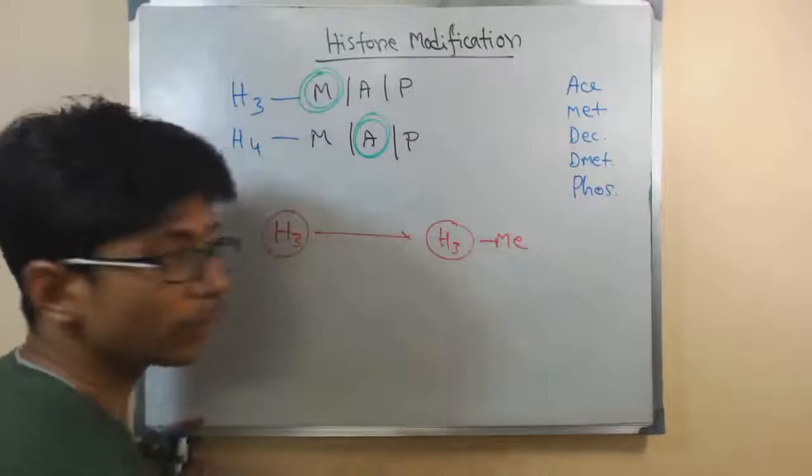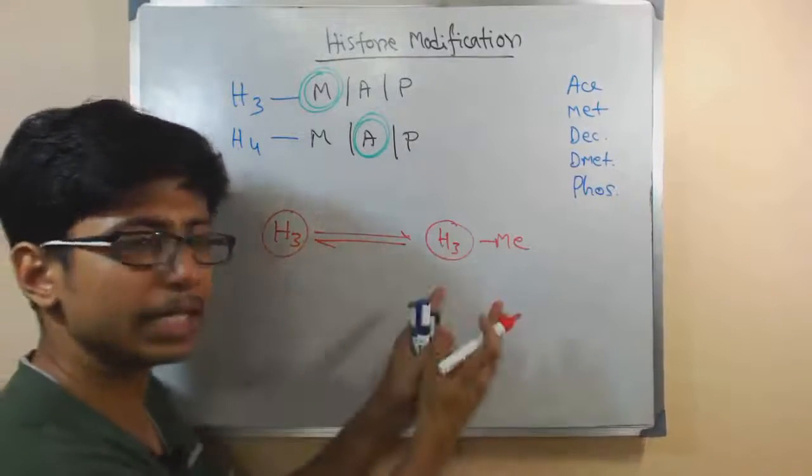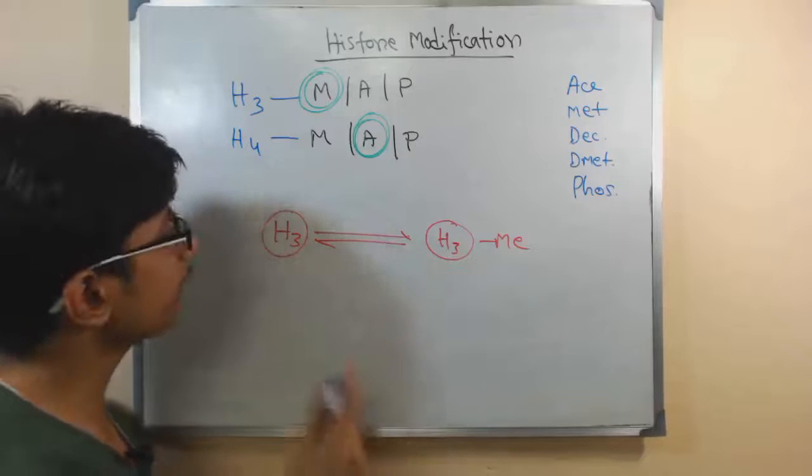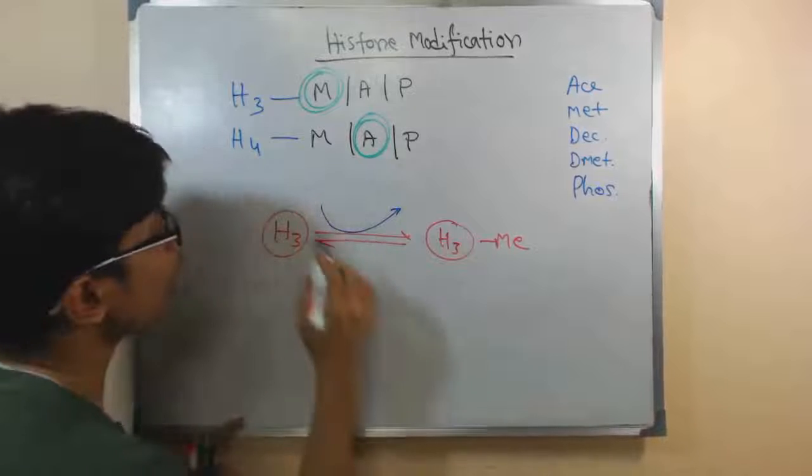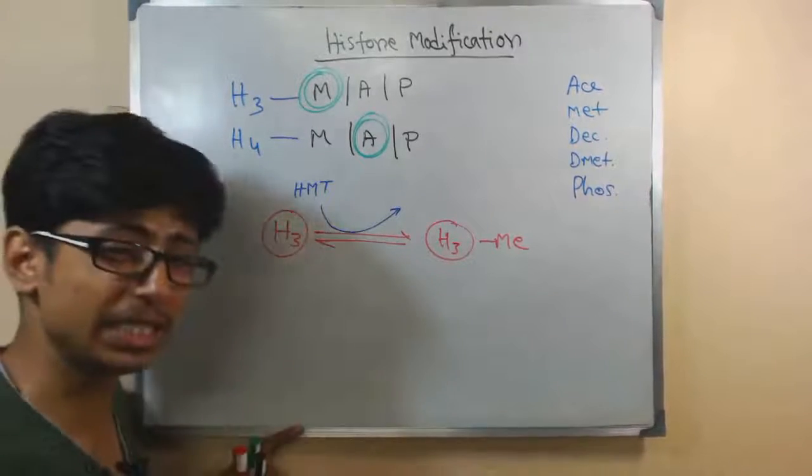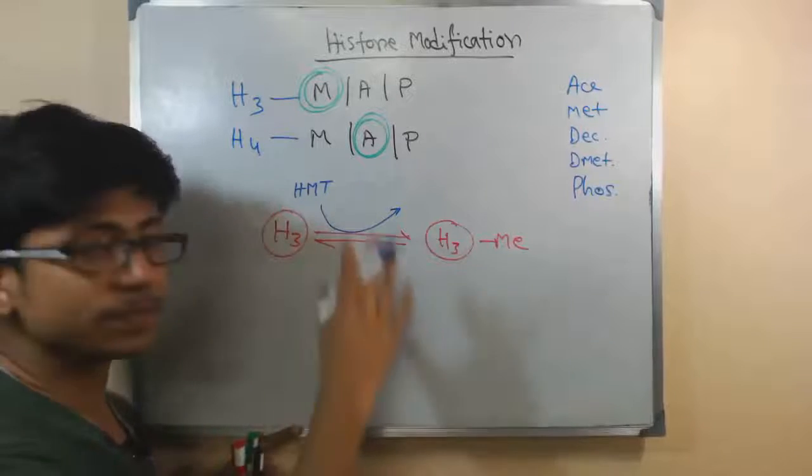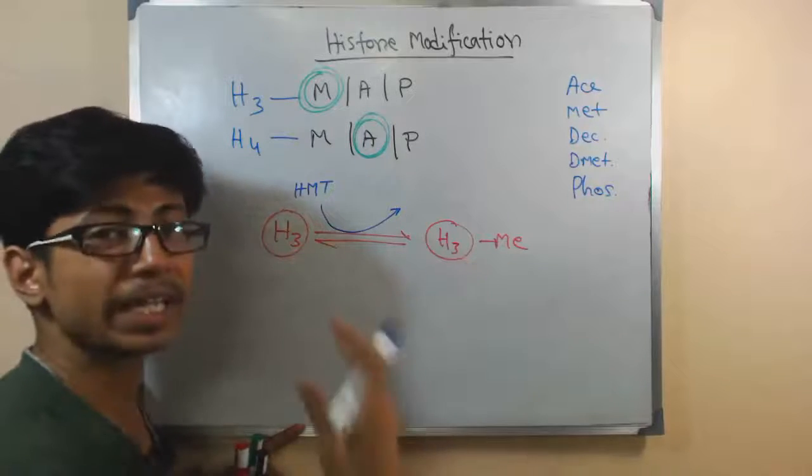This is a methylated form of H3, and these two forms, normal and methylated form of H3, are interchangeable and interconvertible. If you look at the form here, this process of methylation takes place due to the effect of histone methyltransferase or HMT. This is an enzyme, histone methyltransferase, which transfers the methyl group to the histone to make it methylated.